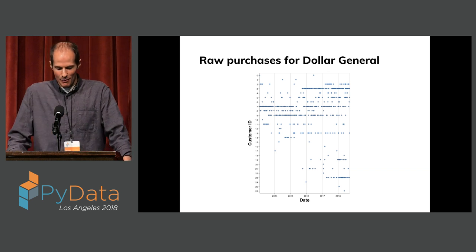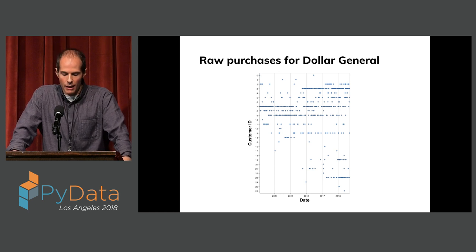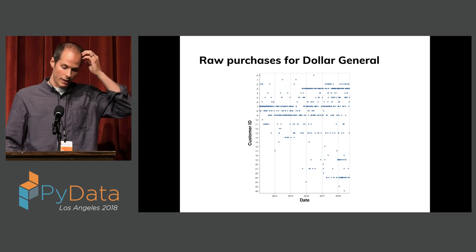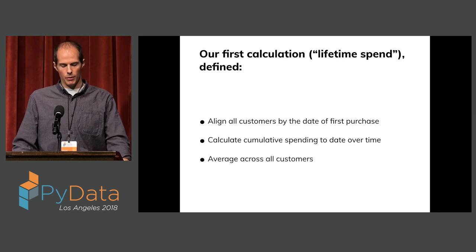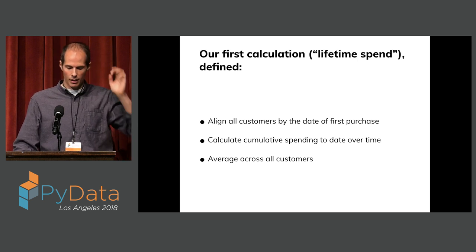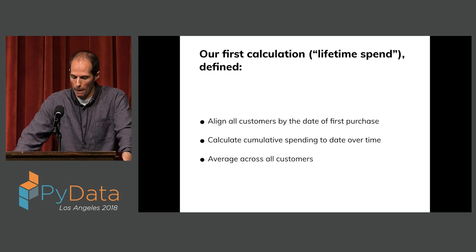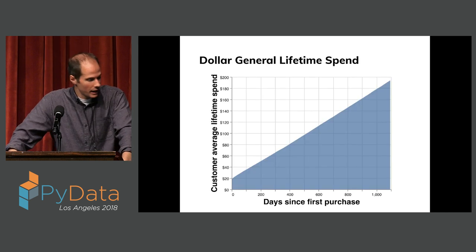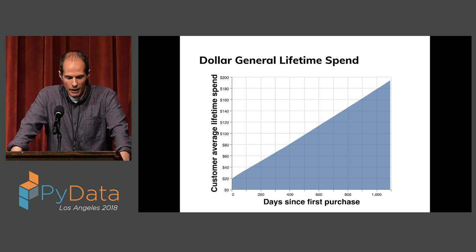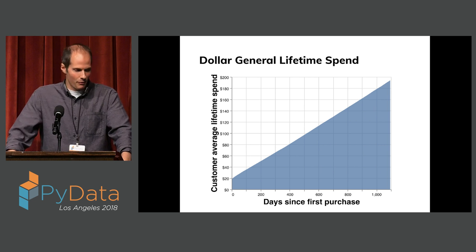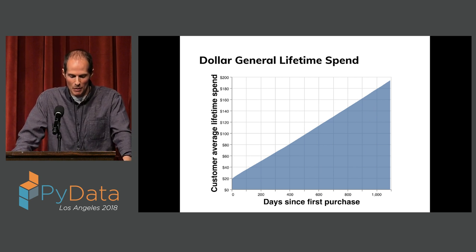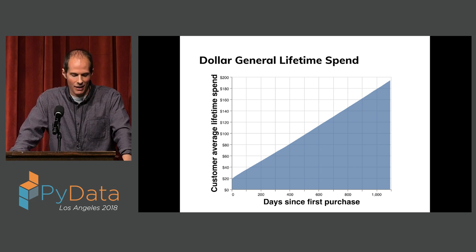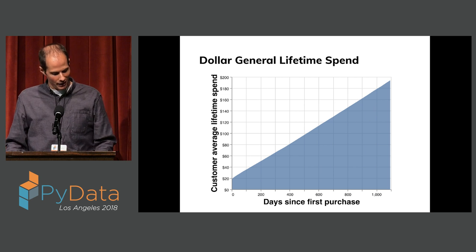When we want to analyze lifetime sales for Dollar General, we start with raw data — time on the x-axis, every dot being a purchase, each row being an individual customer. To calculate lifetime spend, we take all those customers, align them by the date of their first purchase, calculate cumulative spending over time, and average across everybody. When we do that for Dollar General, we get this plot: on day zero they spend $20, and then over about three years it climbs up to $200. When I started making these plots, I didn't have great instincts about how they'd look.